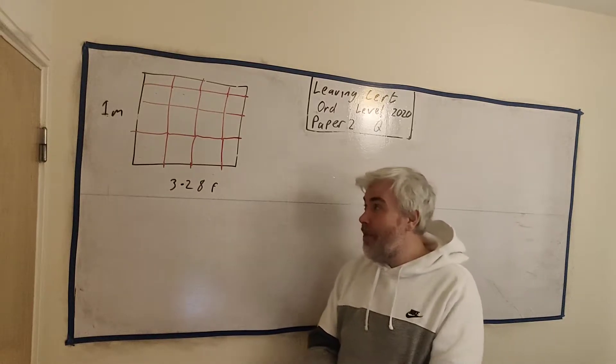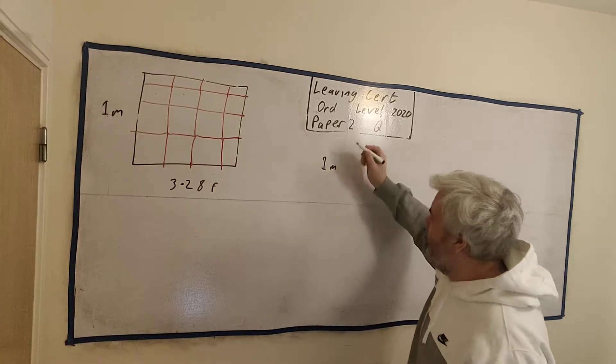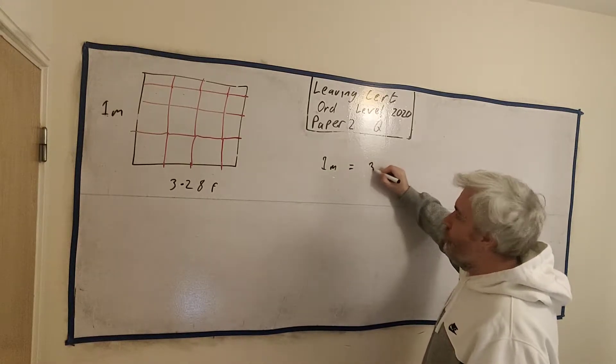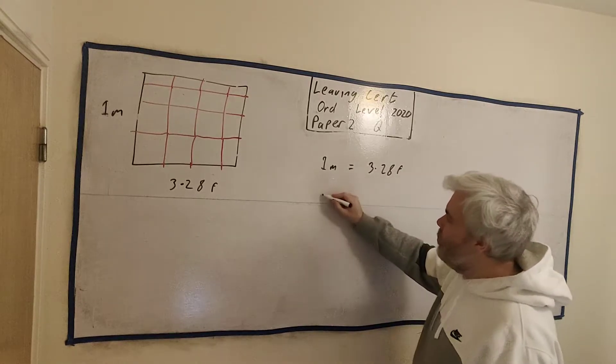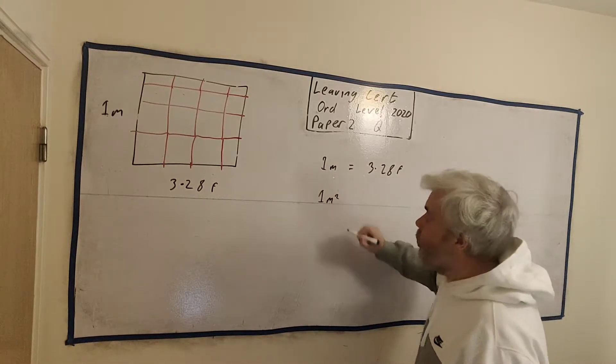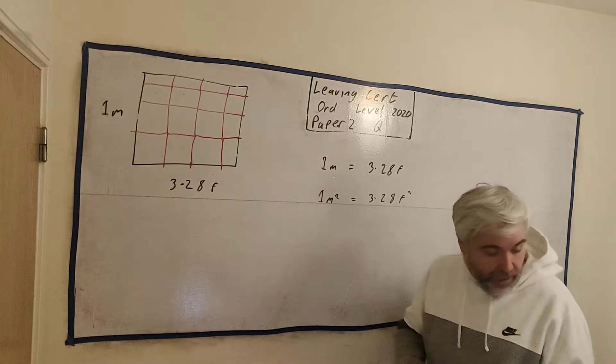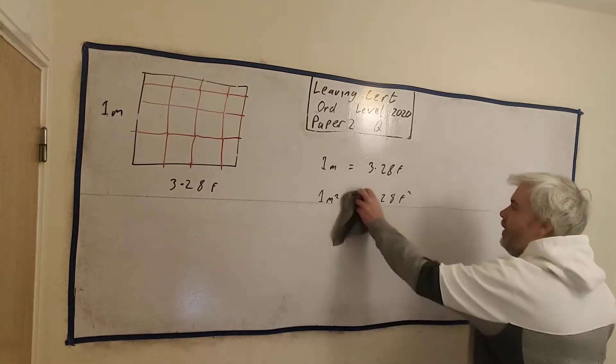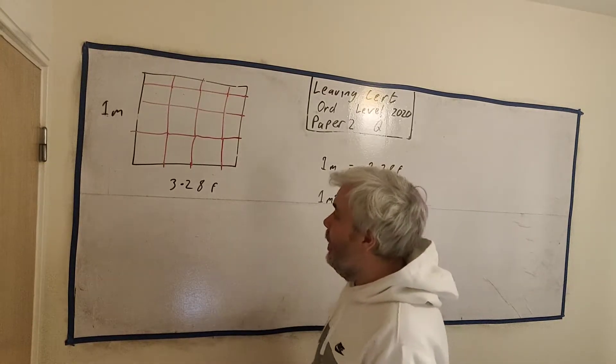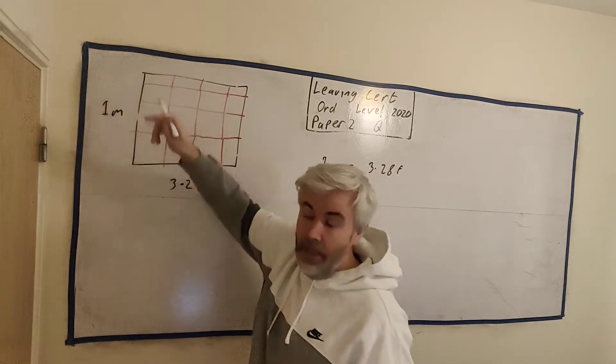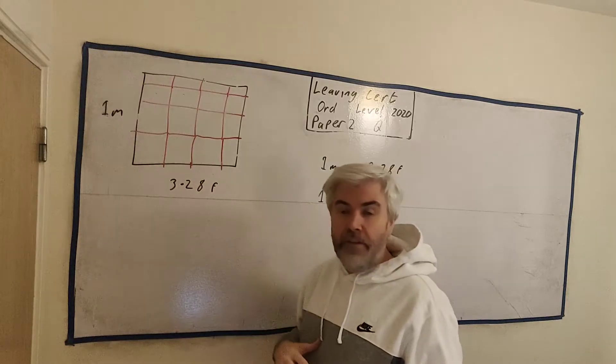Students so many times write things like 1 metre is equal to 3.28 feet. They tell us this in the question. So many students then write things like 1 metre squared is equal to 3.28 feet squared. That is not true. It's easy to see once I've drawn these extra lines in. Here's a square metre, the black box. The red boxes are all square feet.